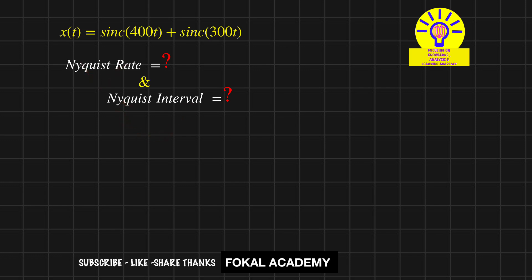What is Nyquist rate? To avoid aliasing effect, we need a certain minimum frequency. That frequency is called the Nyquist rate. Nyquist interval is the inverse of Nyquist rate. Now how can you find the Nyquist rate and Nyquist interval for the given signal?